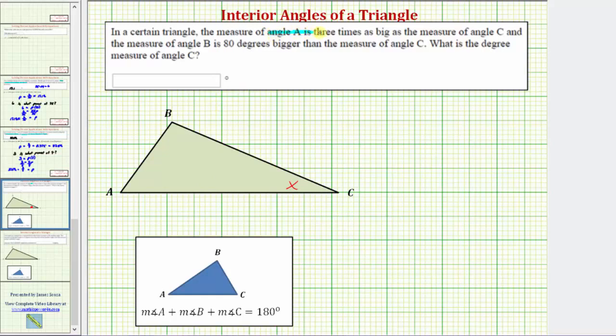Angle A is three times as big as angle C. So if angle C is x degrees, then angle B would have to be three times x degrees. So we'll label angle B with the expression 3x.